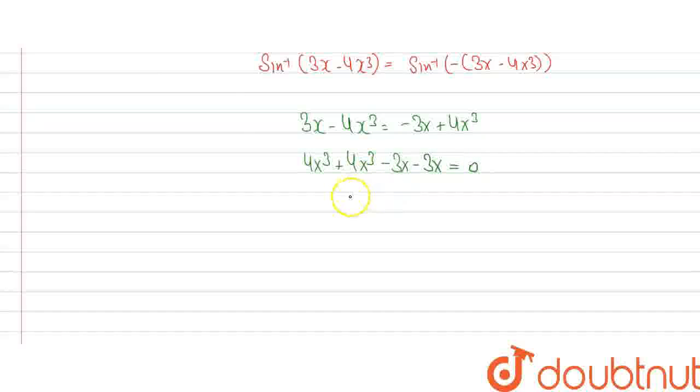So we can write this equation as 8x³ - 6x = 0. From this equation we can say that by taking x common, we get x(8x² - 6) = 0.